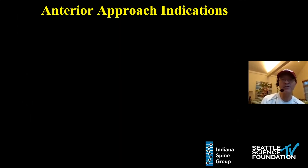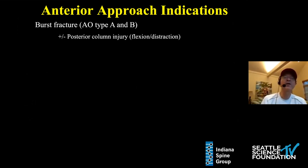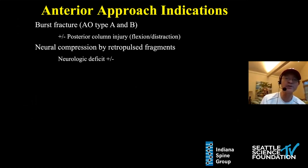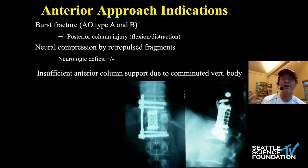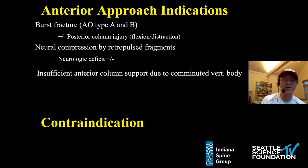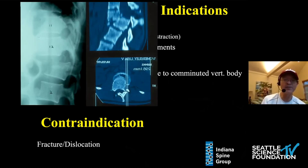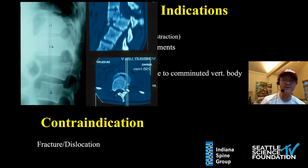In my opinion, indications for an anterior approach include: burst fracture — type A or even type B with posterior ligamentous column injury — neural compression due to retropulsed fragments with or without neurologic deficit, and insufficient anterior column support due to the comminuted vertebral body, which would not allow a short-segment posterior construct. The contraindication, however, is a fracture dislocation — a C-type injury. These are not amenable to anterior-only fixation and require a posterior operation first for realignment, followed by a secondary anterior operation if significant anterior compression remains.